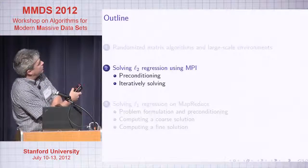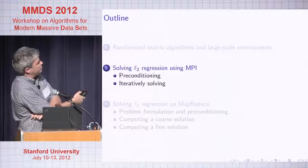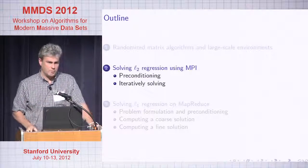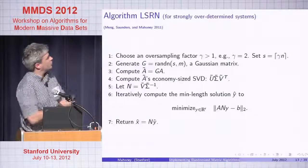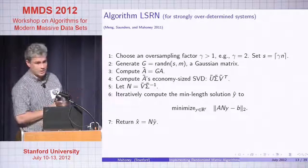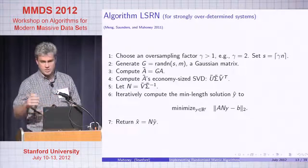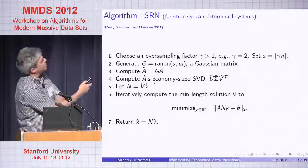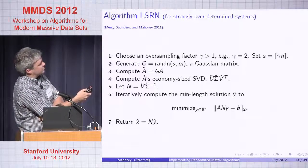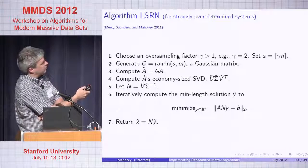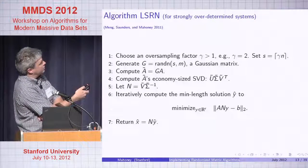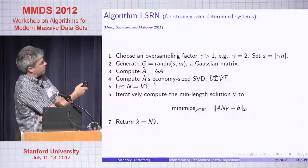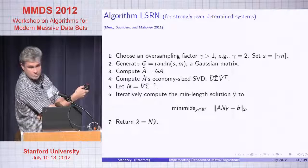For L2 regression, choose some oversampling factor — if we're M by N, sample about 2N columns. Generate a random Gaussian matrix. Do computations on the low-rank projection, get a preconditioner — basically R-inverse from QR, written in terms of SVD. Use what you constructed from the low-dimensional projection as a preconditioner and solve the problem. You can do this in RAM or in a distributed parallel environment.